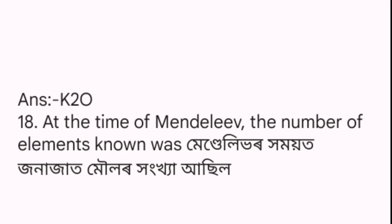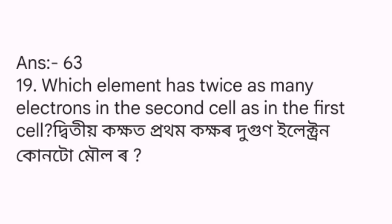Eighteenth question: At the time of Mendeleev, the number of elements known was how many? The answer is 63.